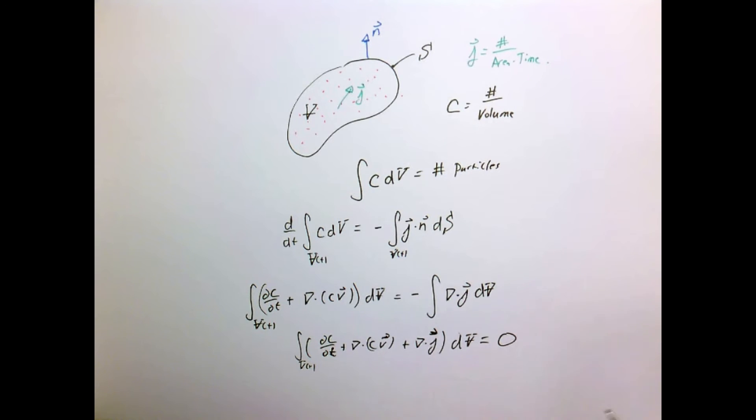Just as in heat conduction, we need a constitutive law that relates j to the concentration. In this case, it's Fick's law. Fick's law is exactly like Fourier's law: we have some constant, the diffusivity D times the gradient of the concentration, gives us the flux.